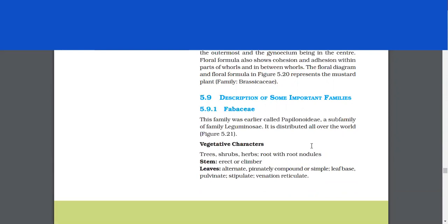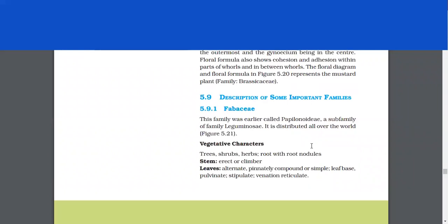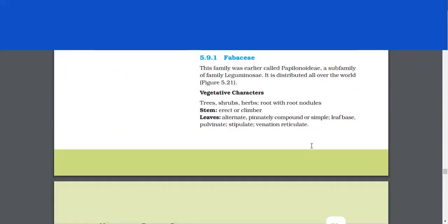Description of some important families. Fabaceae. This family was earlier called Papilionoideae, a sub-family of family Leguminosae. It is distributed all over the world. Vegetative characters. Trees, shrubs, herbs, root with root nodules. Stem, erect or climber. Leaves, alternate, pinnately compound or simple, leaf-based, pulvinate, stipulate, venation, reticulate.